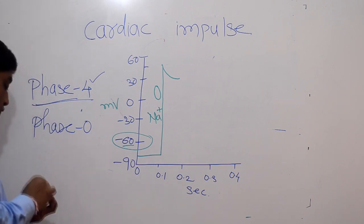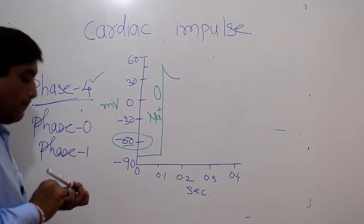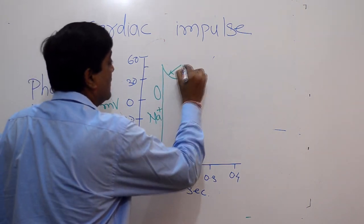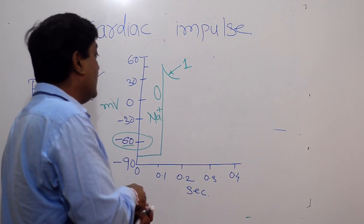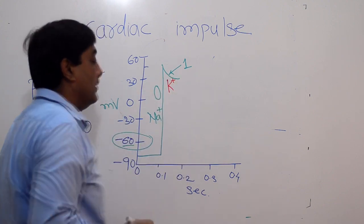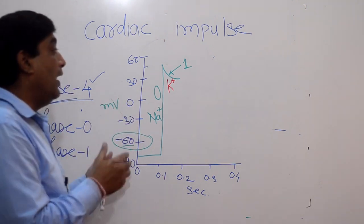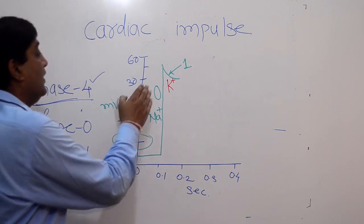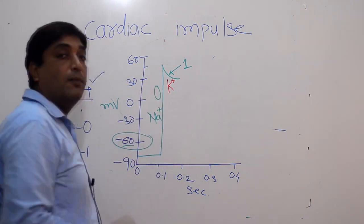The next phase is phase 1, called partial repolarization. The ions involved in this stage are potassium ions. The potassium ion currents here are inwardly directed — that is, potassium is moving inside the cell. This stage is the result of two important events: the first is inactivation of sodium ion channels, and the second is activation of inwardly directed potassium ion currents.